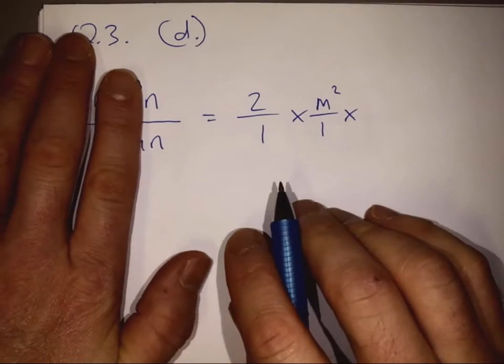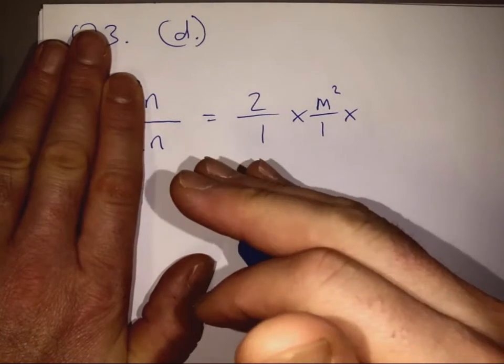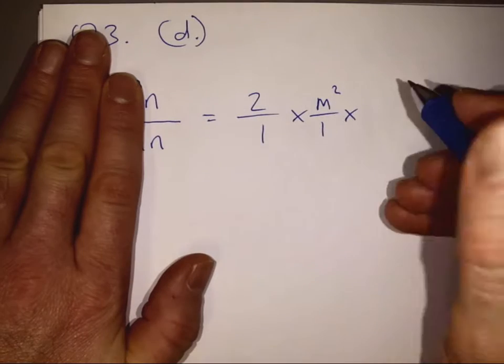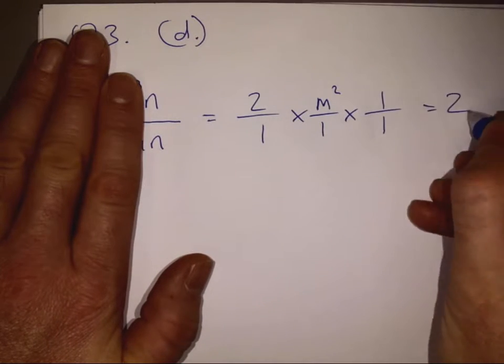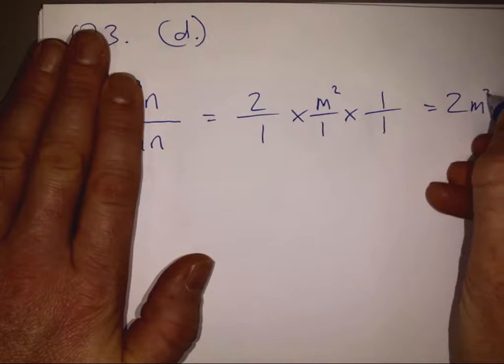Multiplied by n over n. Well, n into n goes once and n into n goes once. So we have 1 over 1. So this simplifies to 2m squared.